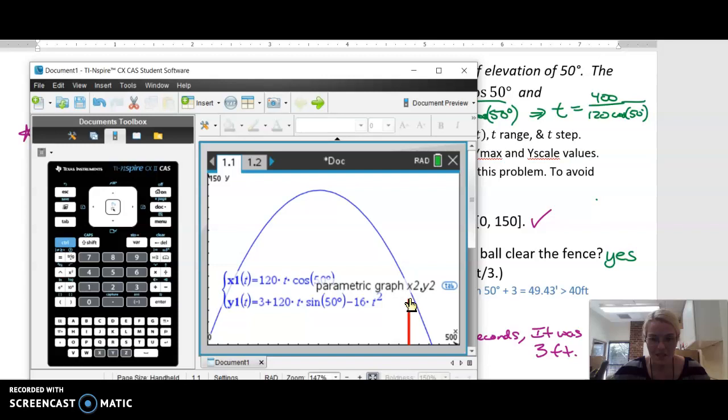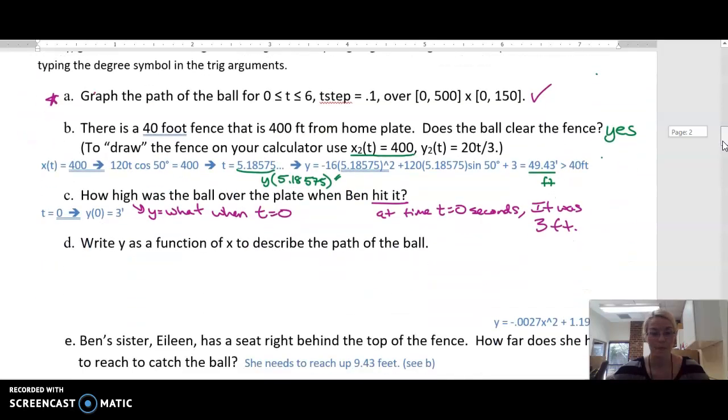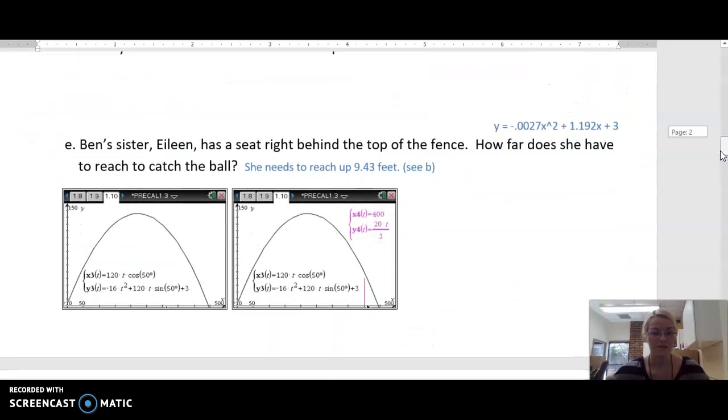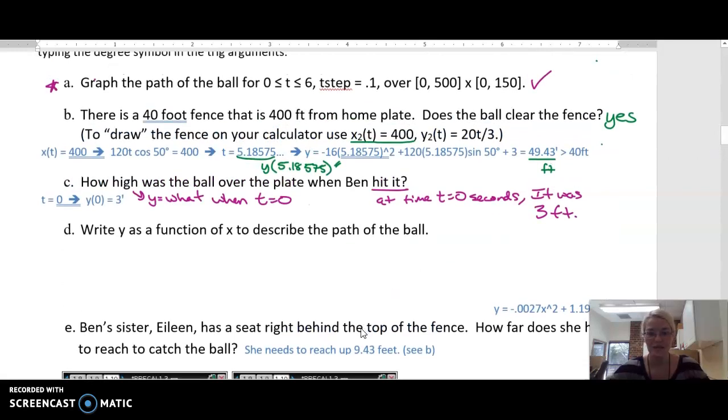When we look at our graph, this is 40 feet tall, and just up here on the upside down parabola, that's 49.43 feet. So does it clear the fence? Yes. This is going to be 49 feet, and that's definitely more than the 40-foot fence. Last but not least, Ben's sister Eileen is sitting right behind the fence. How far does she have to reach to catch the ball? The difference is 9 feet.